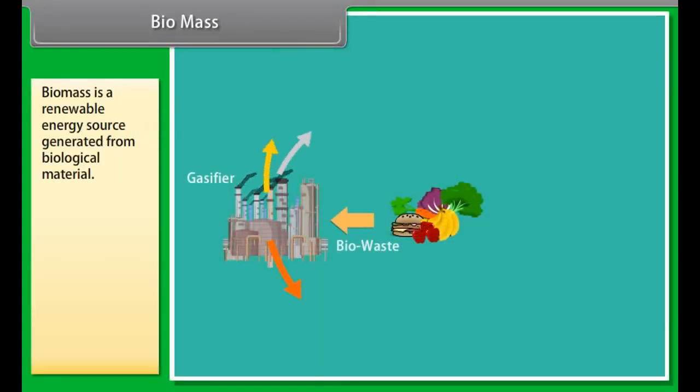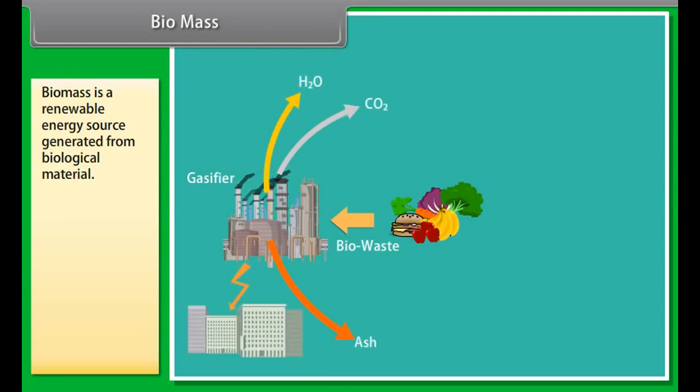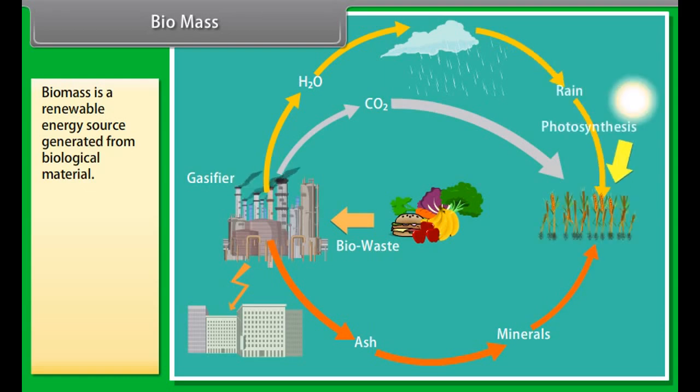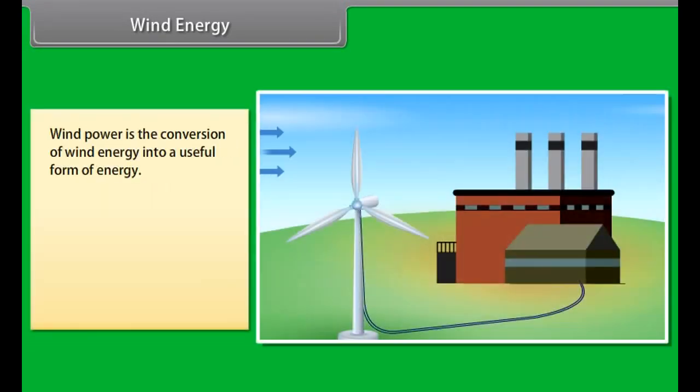Burning fossil fuels generates around 21.3 billion tons (21.3 gigatons) of carbon dioxide (CO2) per year. Natural processes can only absorb about half of that amount. There is a net increase of 10.65 billion tons of atmospheric carbon dioxide per year.